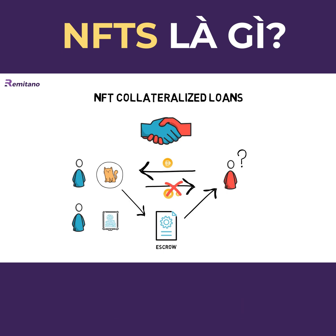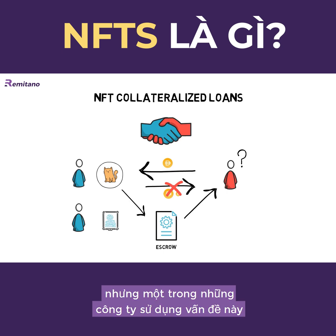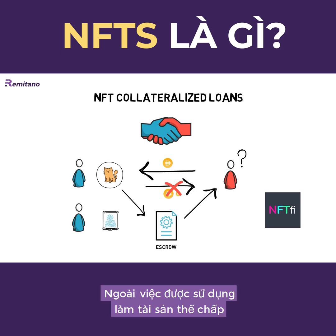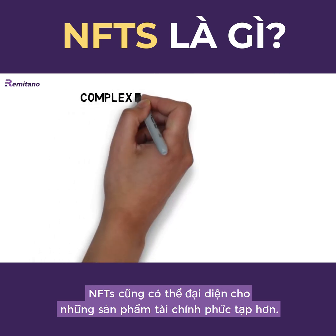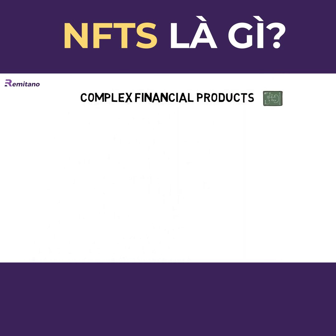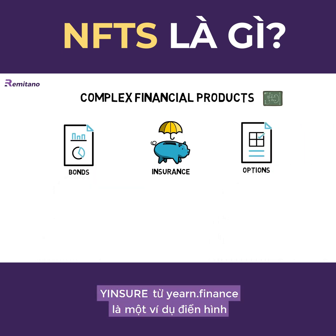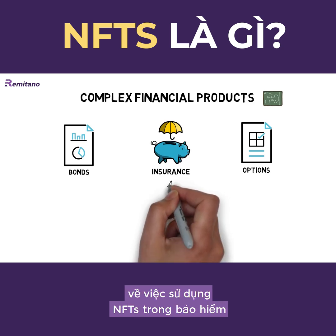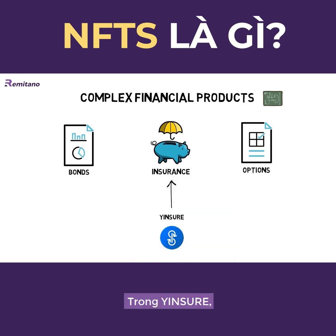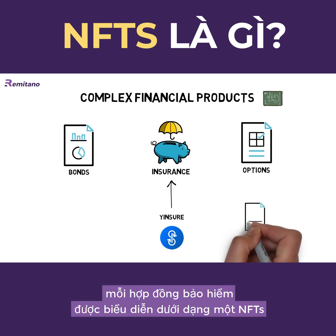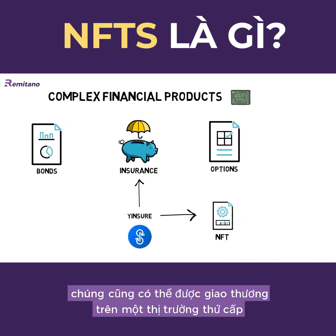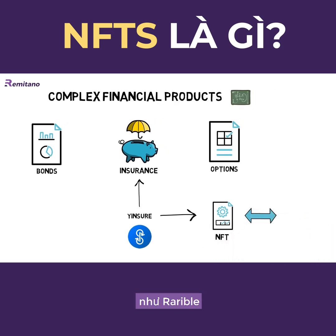This space is really new, but one of the companies that use this model is NFTFi. Besides being used as collateral, NFTs can also represent more complex financial products such as insurance, bonds, or options. Yinsure from Yearn Finance is a good example of NFT usage in the insurance space. In Yinsure, each insurance contract is represented as an NFT that can also be traded on a secondary market such as Rarible.